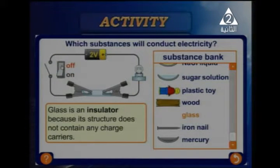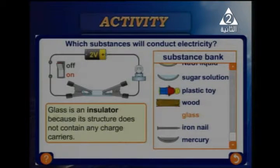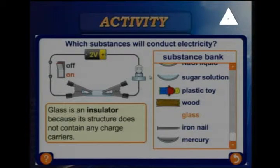With glass in the circuit, whether I open or close the electric circuit, we have no light. Glass is an insulator because its structure does not contain any charges to carry electricity, so no light energy is produced.